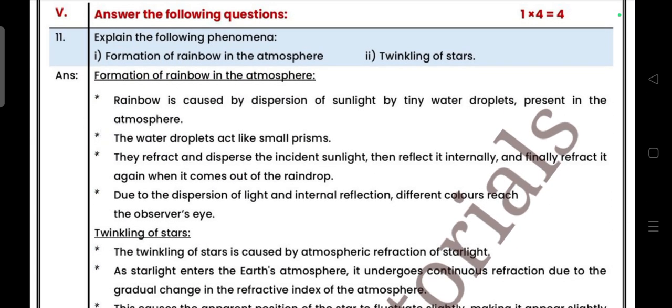Explain the following phenomena: formation of rainbow in the atmosphere, then twinkling of stars. This is a four mark question. You have to explain both. This is the answer. Try to write point-wise because each point carries half mark.